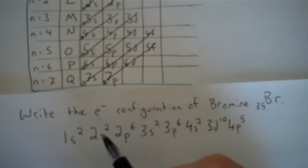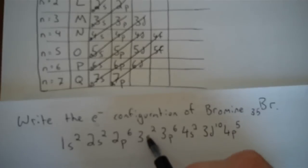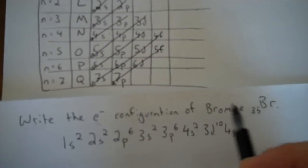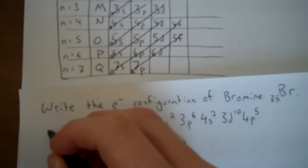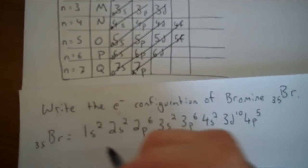I'll add up all of my electrons to make sure it's 35: 2, 4, 10, 12, 18, 20, 30, 35. So this is the electron configuration for bromine.